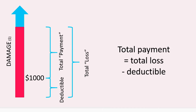So as you can see, the total payment is equal to the total loss minus the deductible. I'll leave this on screen for a moment so you can see how it all works — you can pause the video here if you need more time. Now I'm going to move on to a practice question from the SOA sample problems.